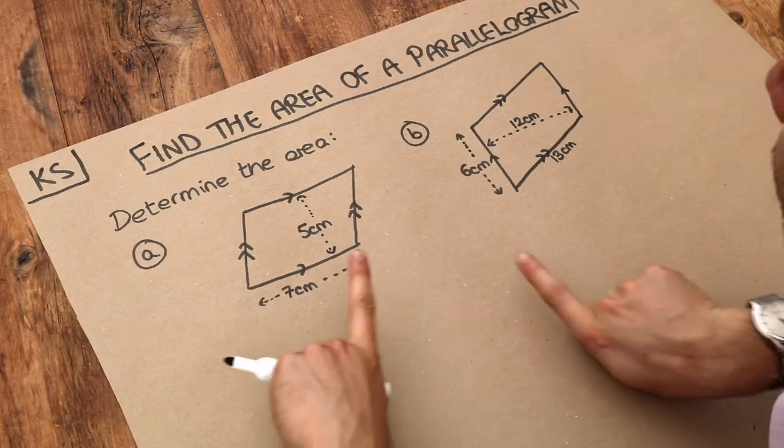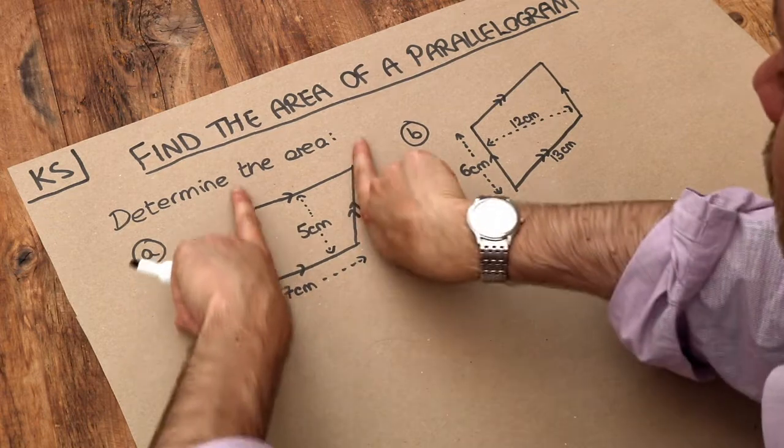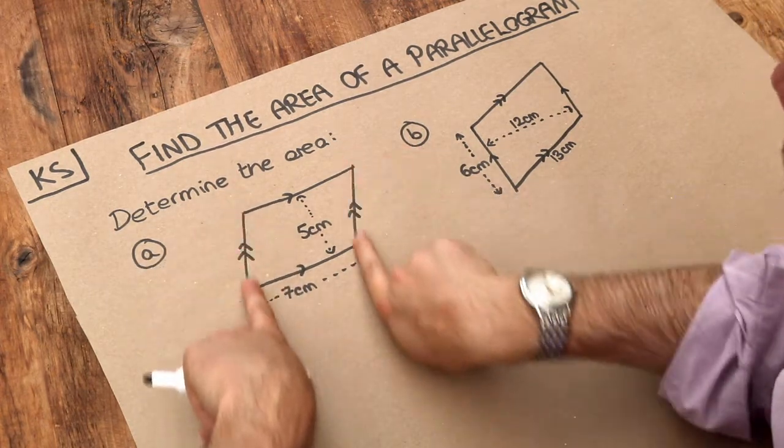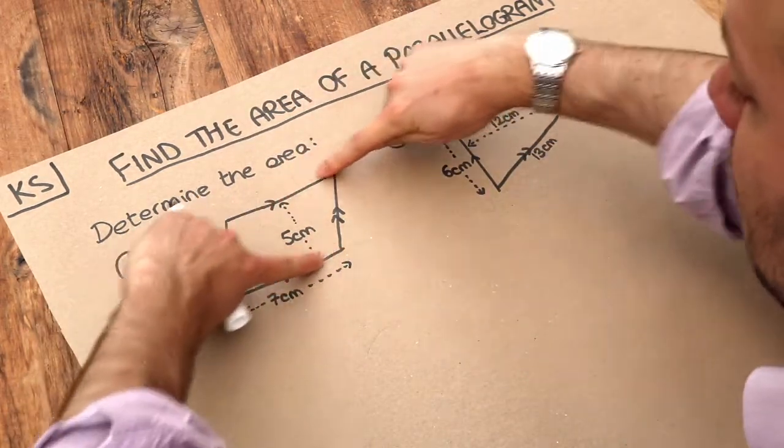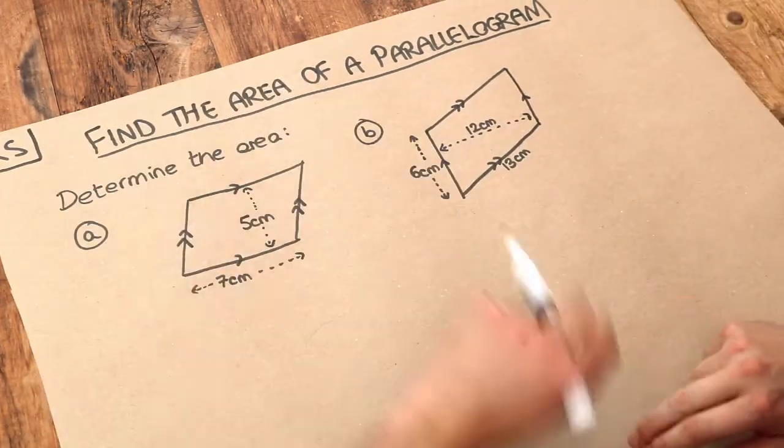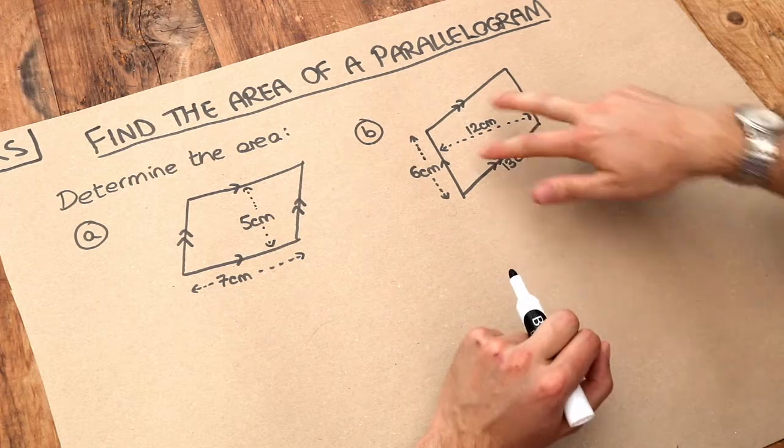Now parallel sides are just when you have lines that are in the same direction. So you can see these lines are in the same direction, that's a pair of parallel sides, and you can see these as well. These are parallel sides because they're in the same direction. It has two pairs of parallel sides, just like this one does.